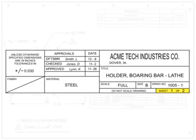Sheet numbering is critical when working on complex parts, as they may require several sheets of drawings. The first number indicates which sheet is being viewed, and the second number indicates how many sheets there are total for the drawing.